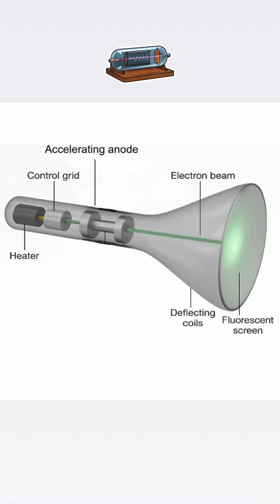A cathode ray tube is a glass vacuum tube that shoots a beam of electrons. Inside it, a heater warms the cathode and releases electrons. These electrons are pulled forward by accelerating electrodes, shaped into a narrow beam, and they fly through the empty tube until they hit a fluorescent screen that lights up wherever the beam lands.